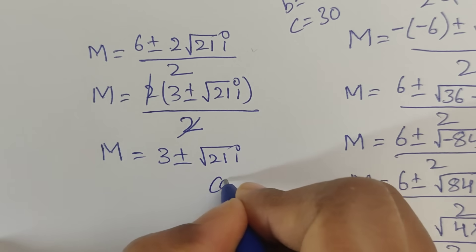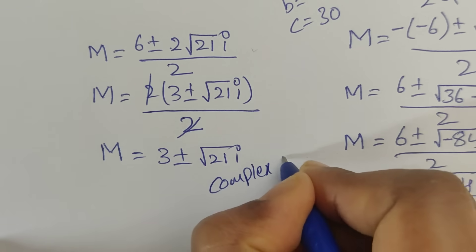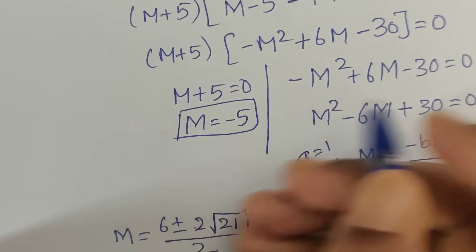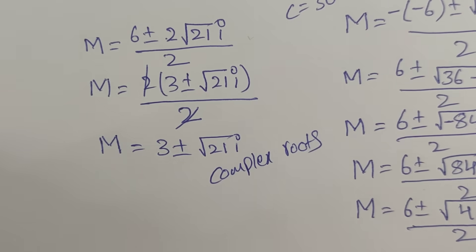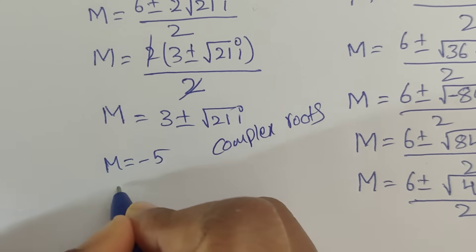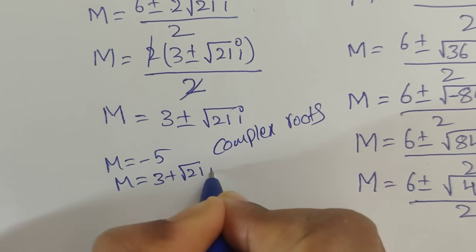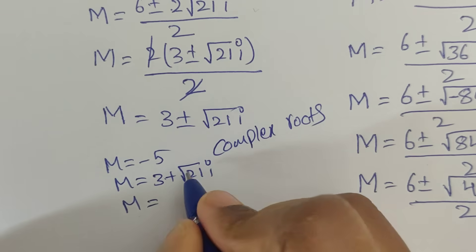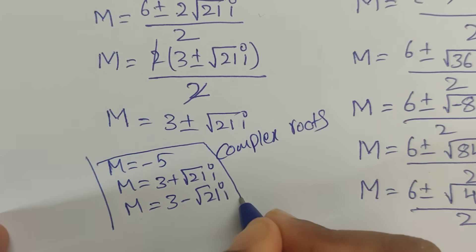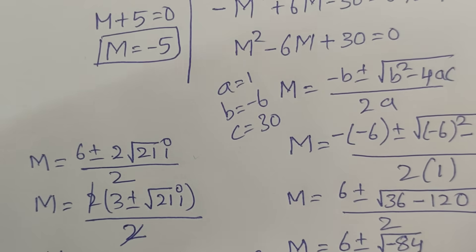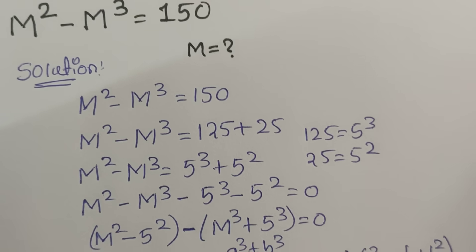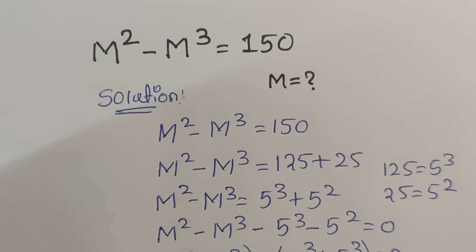So we got complex roots. We got m equals minus 5, and m equals 3 plus or minus square root of 21 i. We got 3 solutions. Thank you for watching. If you like this video please subscribe for more videos. Thank you and take care, bye bye, see you in the next video.